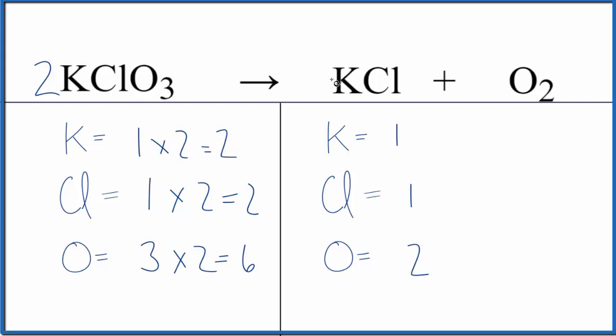Now on the product side, if we put a two in front of the potassium chloride, one times two, that'll give us two of those. So the potassiums they're balanced, chlorine's one times two, two of those they're balanced.